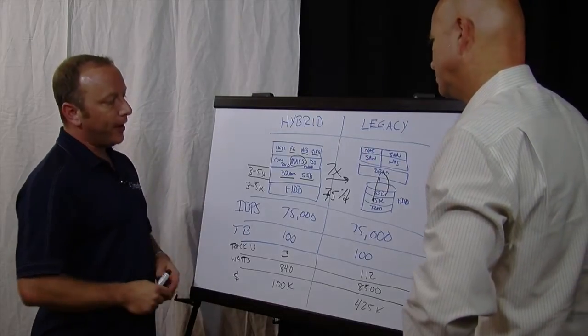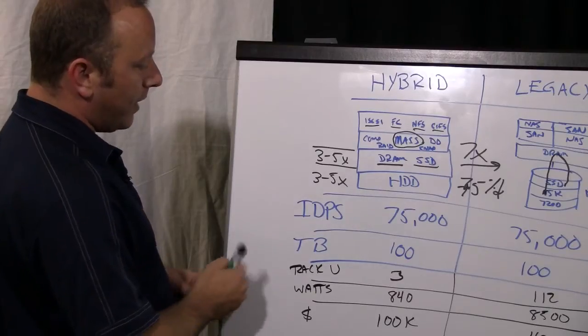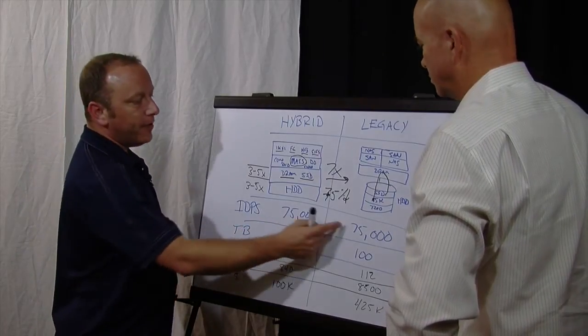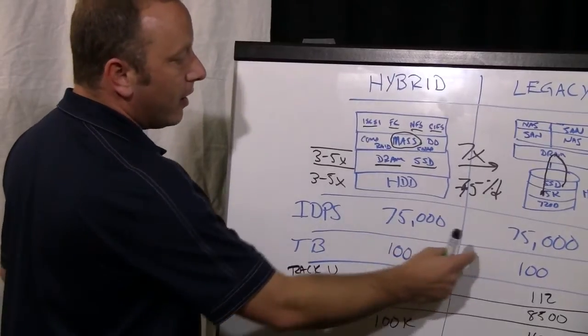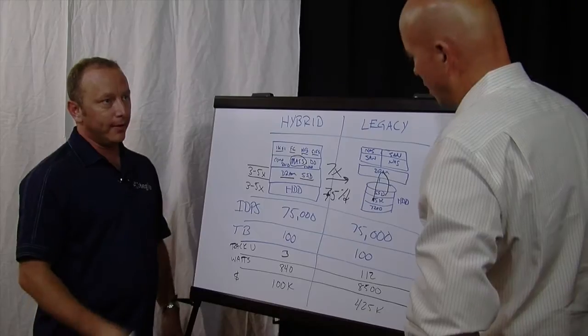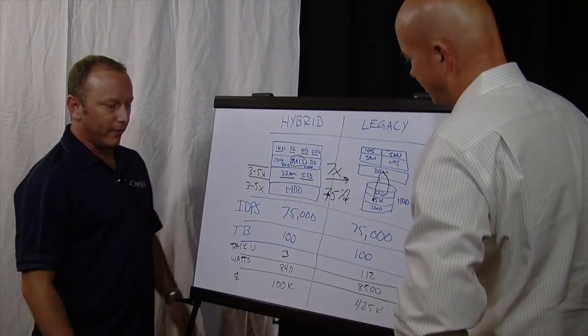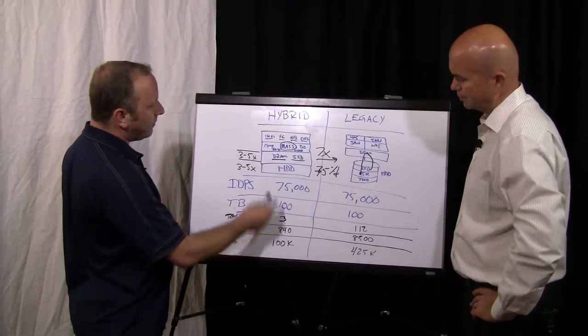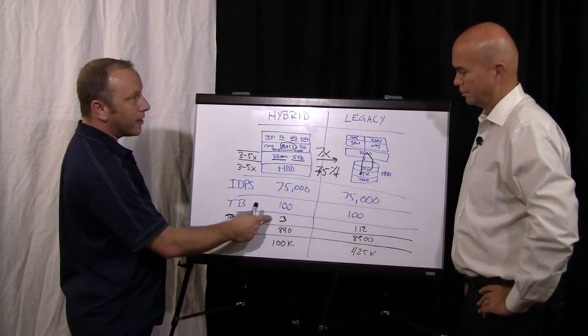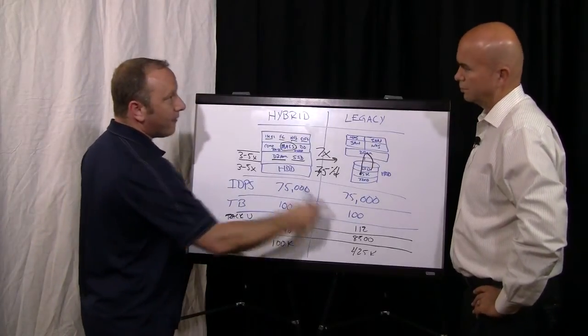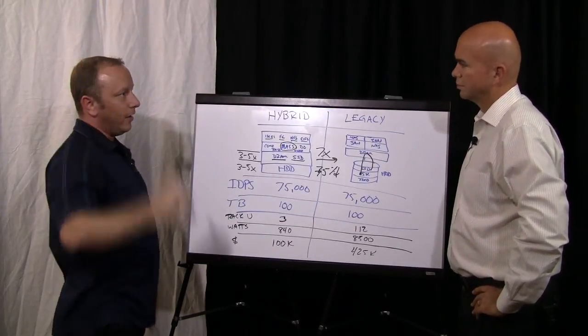And then what I did here, just for comparison's sake, is I normalized here in blue, a customer requirement, very simple at 75,000 IOPS and about a hundred terabytes of capacity. And those numbers might be plus or minus a couple percent, but just average of averages. With a hybrid system, you can pack that in a 3U pizza box package versus two and a half full racks of legacy storage. So you think about the OPEX and things from that. And here you see it.